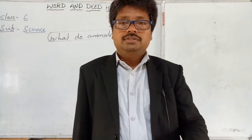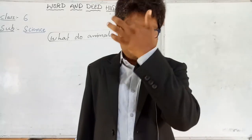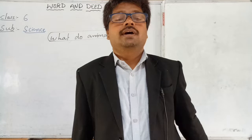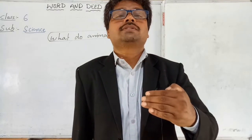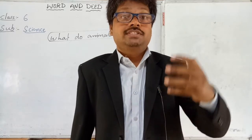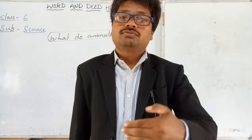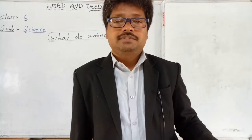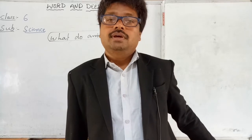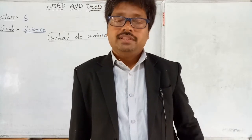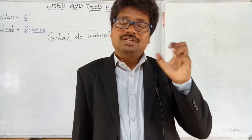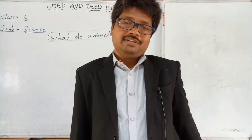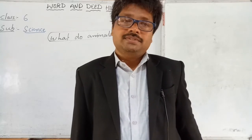Hi students, I am Pawan, your science master. We have been talking about the 'What Do Animals Eat' chapter. In the last video we talked about how leeches and earthworms get their food, what body parts help them, and what their food is. The body part that helps them get their food is the sucker — they have suckers in their mouth. Leeches suck blood, and earthworms suck the wet organic matter present in the soil. Snails also suck wet organic matter from the soil.